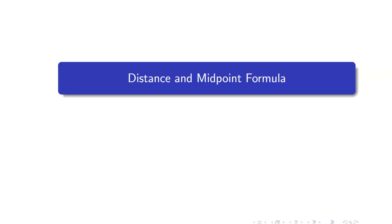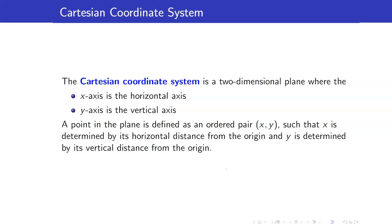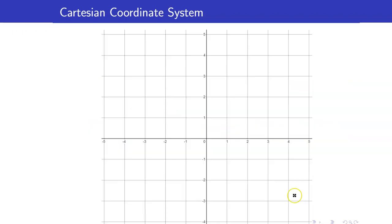In this lesson, we are going to study the distance and midpoint formula. First, let us talk about the Cartesian coordinate system. The Cartesian coordinate system is a two-dimensional plane where the horizontal axis is your x-axis and your vertical line is your y-axis.